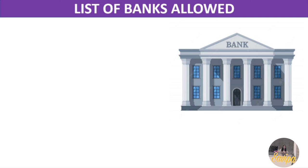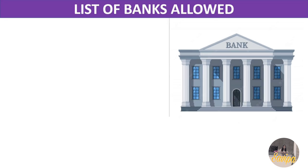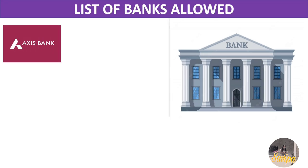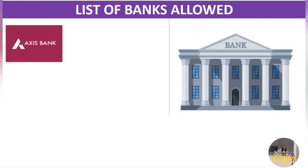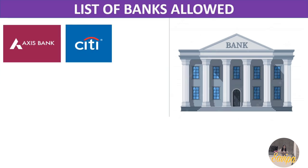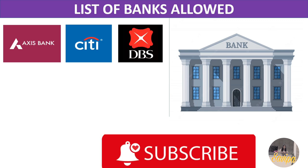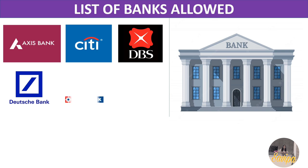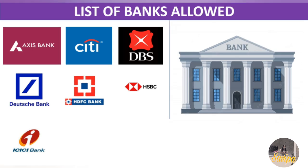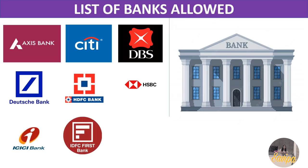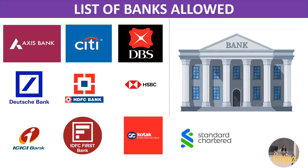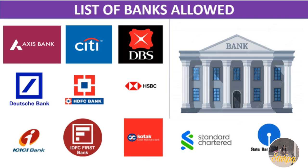Now let us see the list of banks which are allowed by Accenture. The first bank is Axis Bank. Next is Citi Bank, then DBS Bank, Deutsche Bank, HDFC Bank, HSBC Bank, ICICI Bank, IDFC First Bank, Kotak Mahindra Bank, Standard Chartered Bank, and last is SBI, which is State Bank of India.